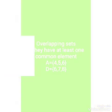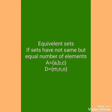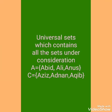Next one is Equivalent sets. If sets have no same but equal number of elements — meaning the elements will not be the same but their quantity will be the same. As you can see in A and B, we have 3 elements each. The number of elements is the same but they are not the same: first is ABC and second is MNO. So they are equivalent sets.